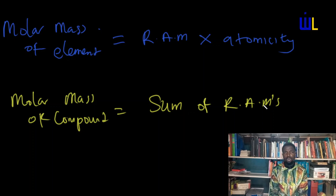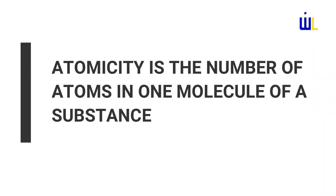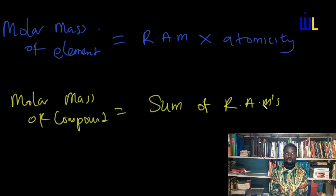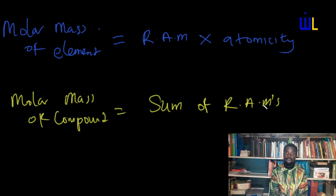You might be wondering what I mean by atomicity. Atomicity is simply the number of atoms found in one molecule of an element. Gaseous elements tend to be diatomic, with the exception of your noble gases. Your metals are usually monatomic. Your non-metals are also usually monatomic. There are some exceptions, but this will be understood in another video on the trends of atomicity in elements.